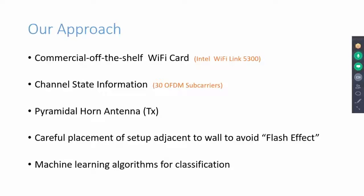After collecting CSI data from different experiments, we use machine learning algorithms to classify static and moving person cases and predict the number of people moving behind the wall.